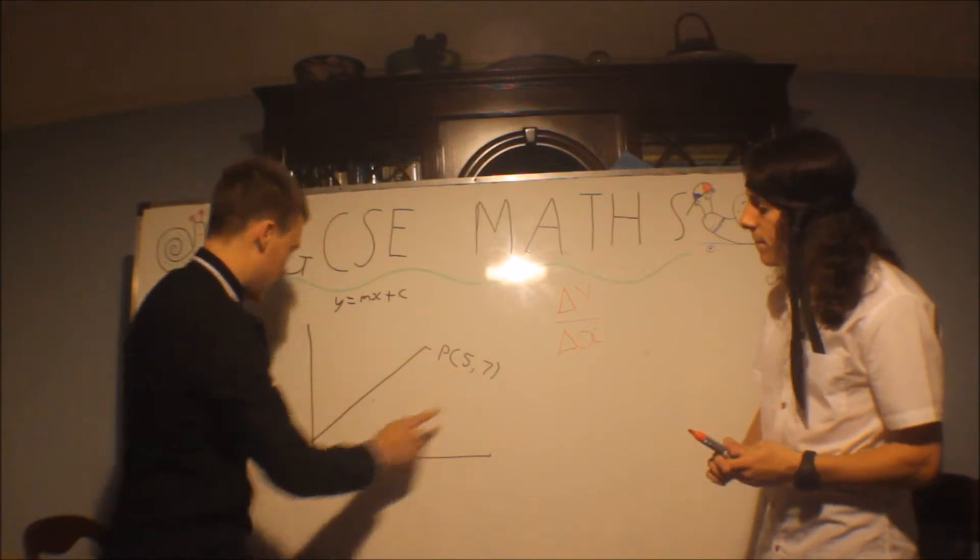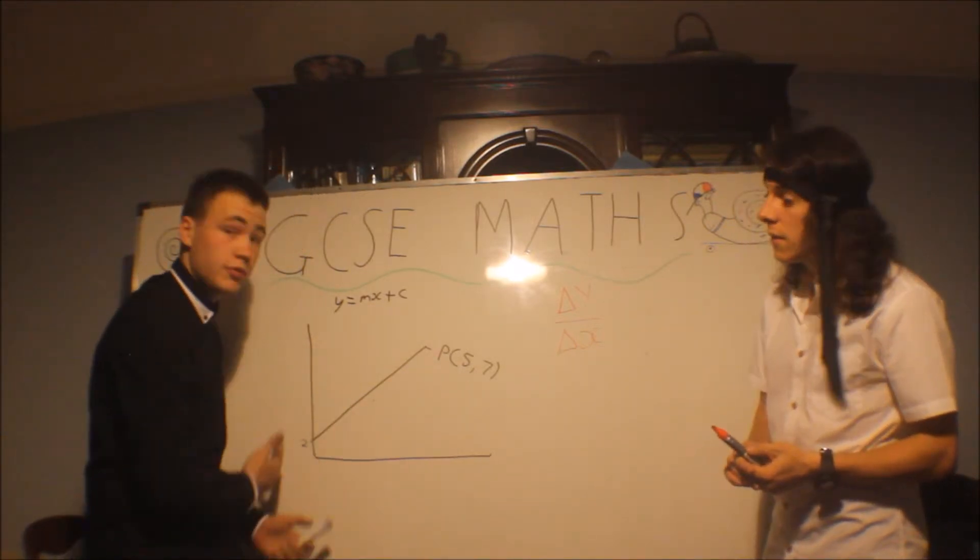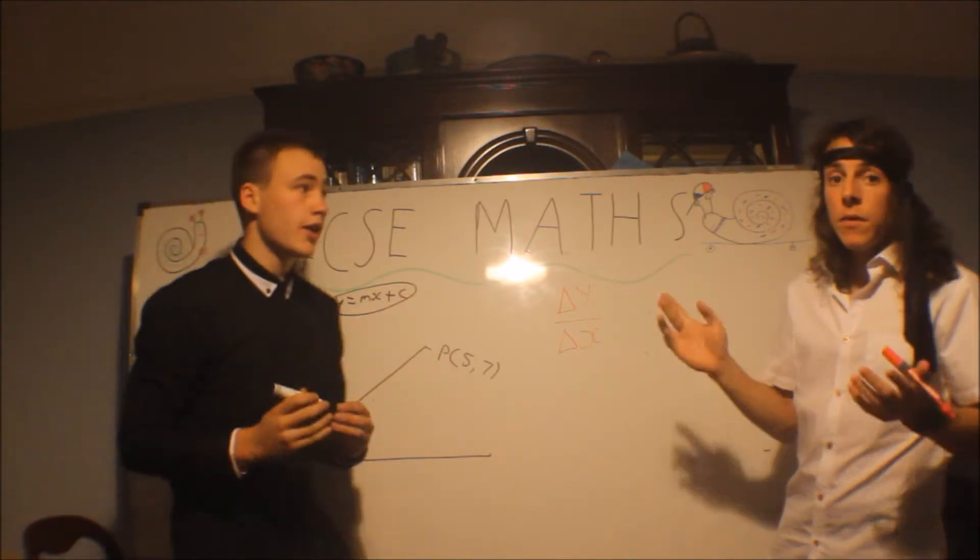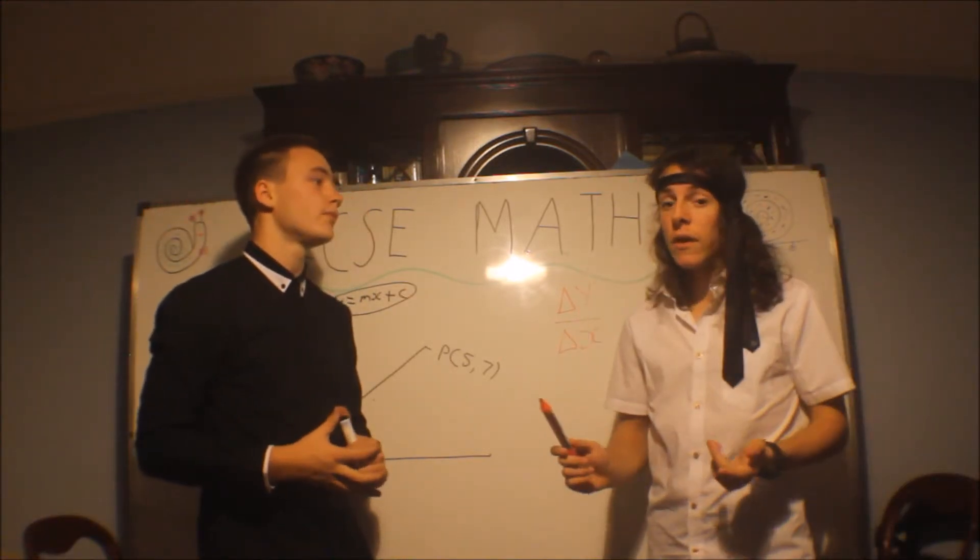So we have this. This is the point p, 5, 7. This is the point 2 it goes through. You've been told this much information. Work out the equation of the line. So, let's do that.